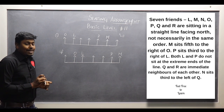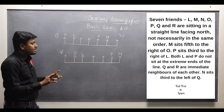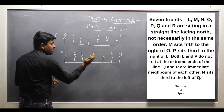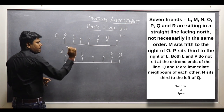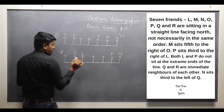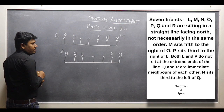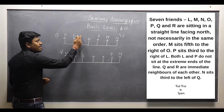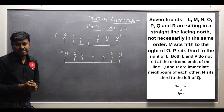Next point: Q and R are immediate neighbours of each other. So Q and R must sit next to each other. In the first possible diagram, this is the place for Q and R. Similarly, in the second possible diagram, this is the place for Q and R. The only remaining letter is N, so I fix N in the remaining seat in both diagrams. However, we do not yet know the exact order of Q and R.